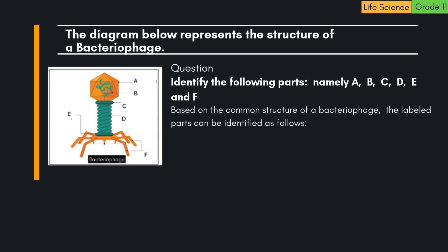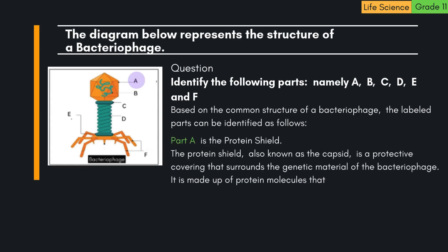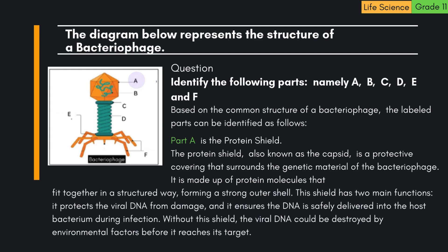Based on the common structure of a bacteriophage, the labeled parts can be identified as follows. A is the Protein Shield. The protein shield, also known as the capsid, is a protective covering that surrounds the genetic material of the bacteriophage. It is made up of protein molecules that fit together in a structured way, forming a strong outer shell. This shield protects the viral DNA from damage and ensures the DNA is safely delivered into the host bacterium during infection. Without this shield, the viral DNA could be destroyed by environmental factors before it reaches its target.